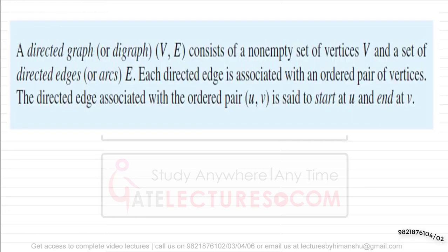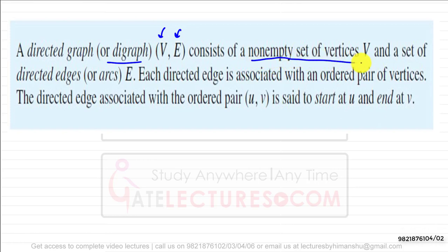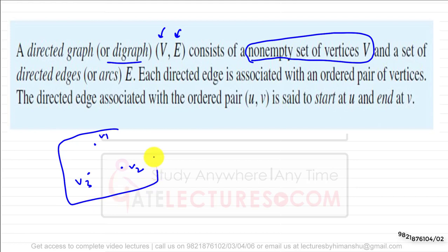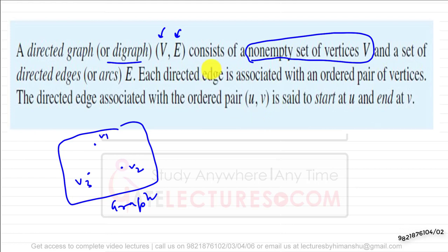We can also have directed multi graphs and mixed graphs. A directed graph, or digraph, is represented by G = (V, E), consisting of a non-empty set of vertices — because without a vertex a graph cannot exist — and a set of directed edges. A graph can exist without any edges, but vertices are mandatory.